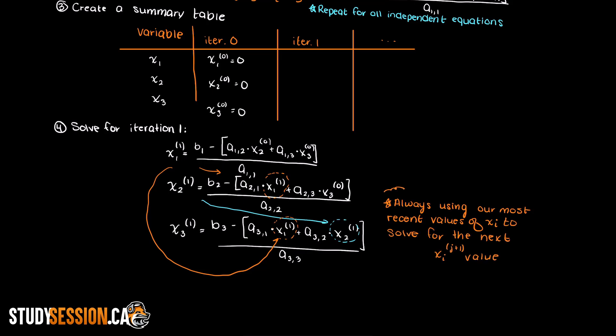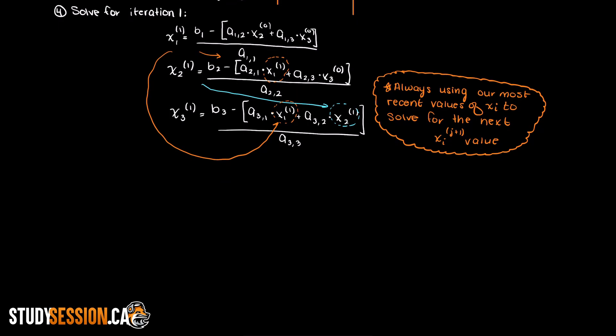Lastly, let's move on to solving x3 for iteration 1, and to do this we use x1 and x2 that we found in the first iteration column here.